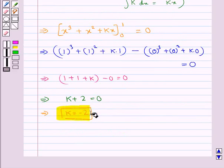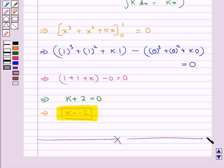So the final value of k is minus 2. This completes the session. Hope you have understood the solution to this question.